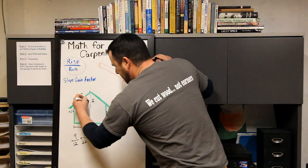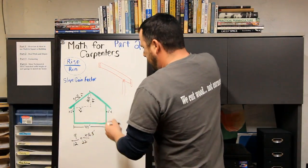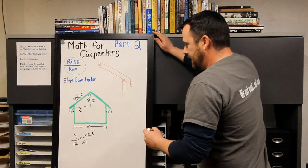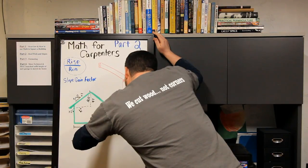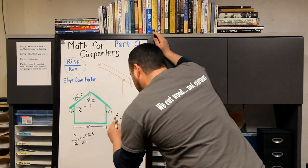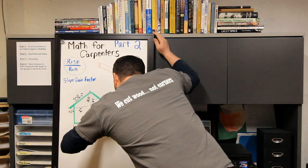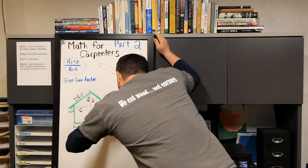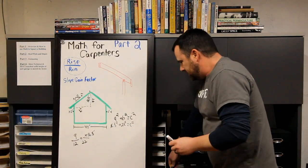Now I use Pythagorean theorem. So I go a squared plus b squared equals c squared. So I go 16.5 squared plus 22 squared equals c squared.